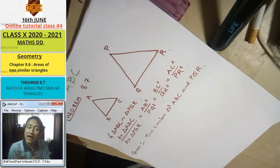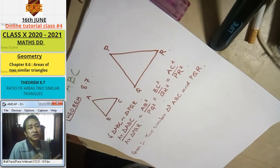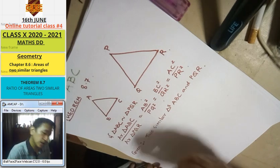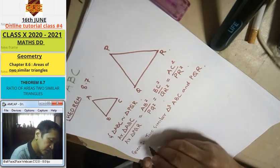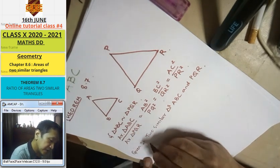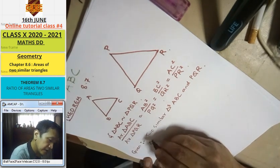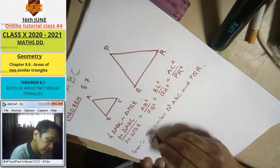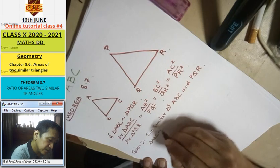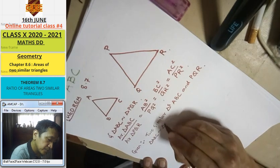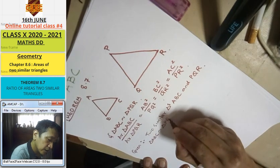Corresponding angles will be equal. Corresponding sides will be proportional. Triangle ABC is similar to triangle BQR.